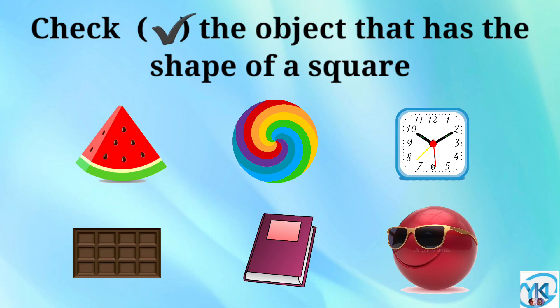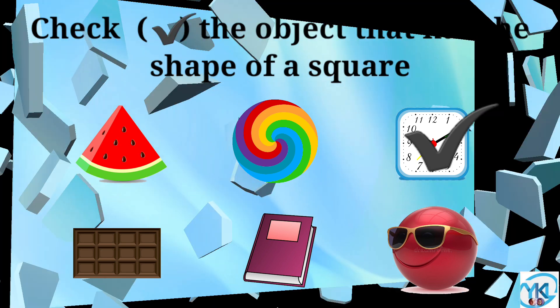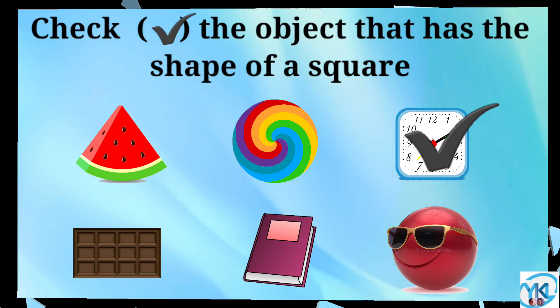Check the object that has the shape of a square. The clock has the shape of a square. Good job. The clock has the shape of a square.